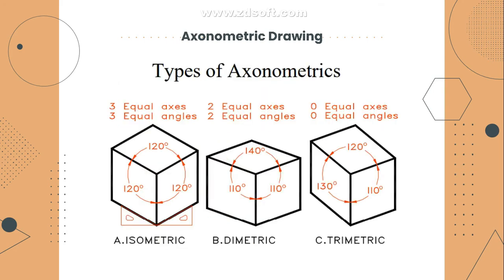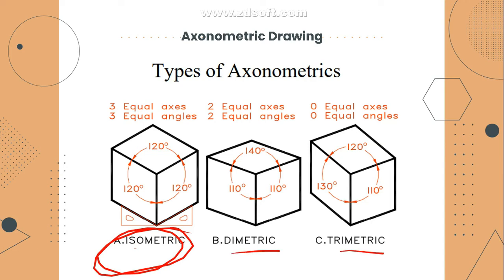We have three types of axonometric drawings: isometric, dimetric, and trimetric. Usually, only the isometric drawing is used because the angles and axes are equal on all three sides. With dimetric or trimetric, it is more difficult to identify the exact size and shape of the material because the sides are not projected equally.